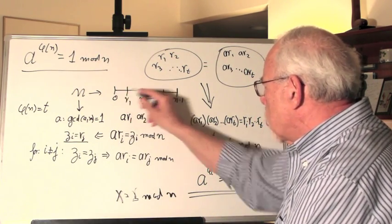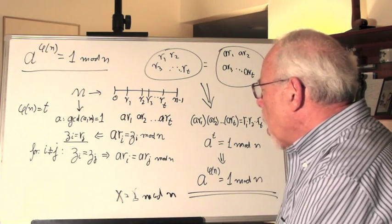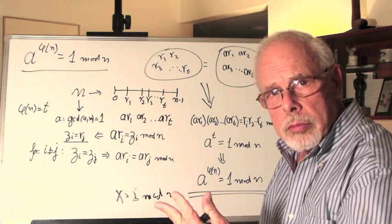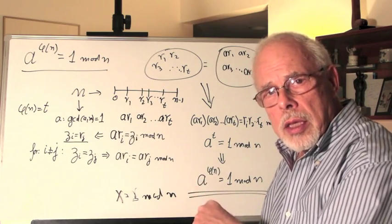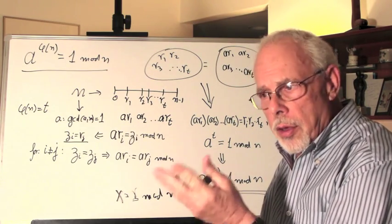Now, among those 0 to n minus 1, there are a few who are co-prime with n. How many? Phi n.